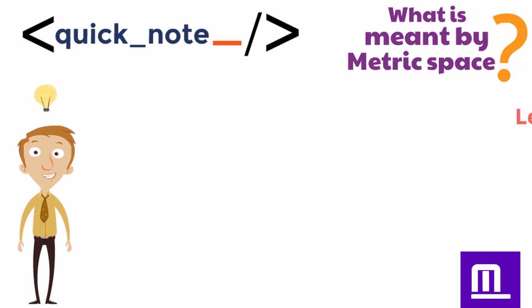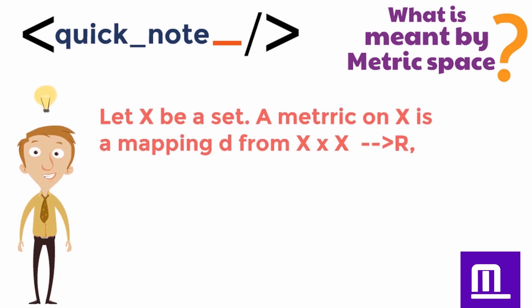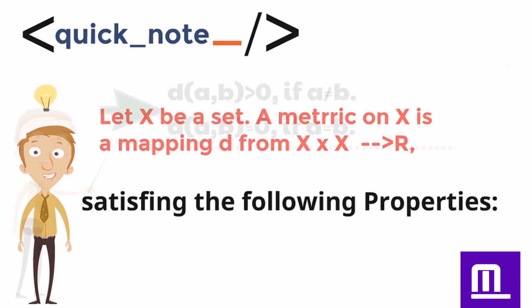On a quick note, what is meant by metric space? Let x be a set. A metric on x is a mapping d from x cross x to R, satisfying the following properties.